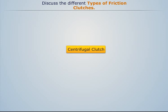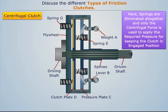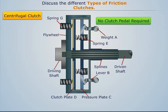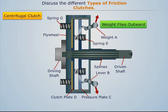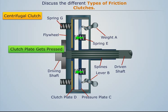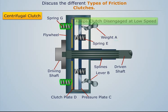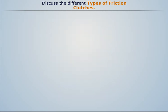Centrifugal clutch: In a centrifugal clutch, springs are eliminated altogether and only centrifugal force is used to apply the required pressure to keep the clutch engaged. No clutch pedal is used, as the clutch automatically disengages below a certain speed. As speed increases, weight A flies outward, operating lever B which presses pressure plate C. This force is transmitted to clutch plate D with the help of springs E. The clutch plate, containing friction linings, gets pressed against the flywheel, thereby transmitting torque. Spring G is used to keep the clutch disengaged at low speed. This concludes the summary of the different types of friction clutches.